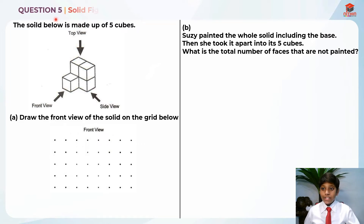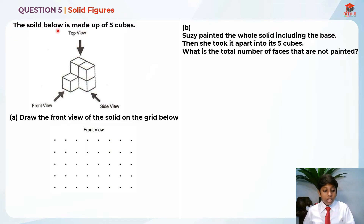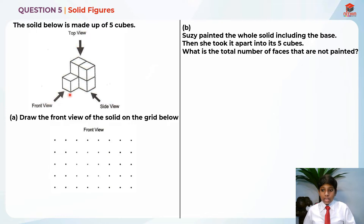This question is testing us on solid figures. So let's read Part A first. The solid below is made up of 5 cubes. So this is the solid: 1 cube, 2 cube, 3 cube, 4 cube, and the 5th cube is under this cube. They are telling us this is the front view, side view, and top view. Part A asks us to draw the front view of the solid on the grid below.